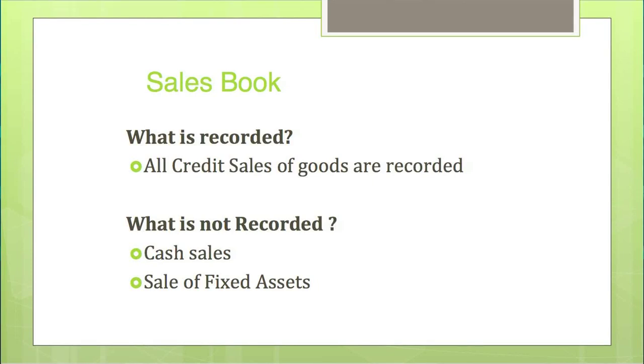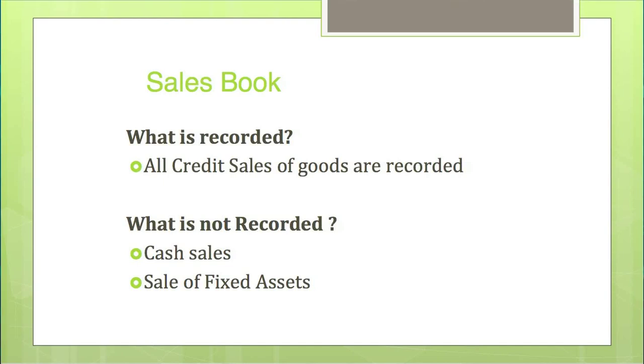The Sales Book is for recording credit sales. All entries relating to credit sales of goods — items regularly dealt in by the business — are recorded in the Sales Book. Cash sales and sales of fixed assets will not be recorded in the Sales Book. So anything relating to the sale of goods on credit is recorded in the Sales Book, and credit purchase and credit sale transactions are thus recorded in two different books, minimizing entries in the main journal.